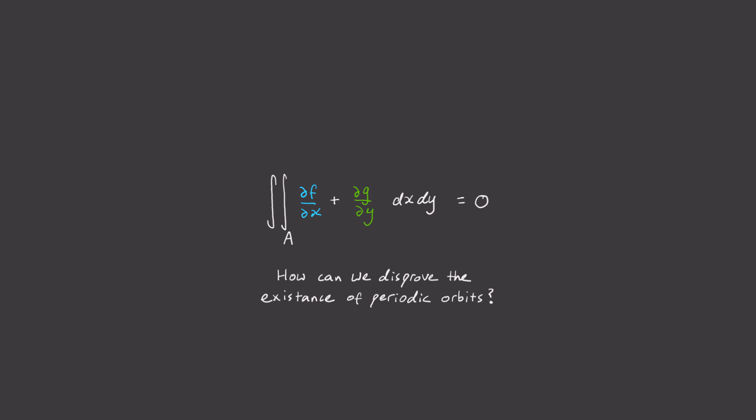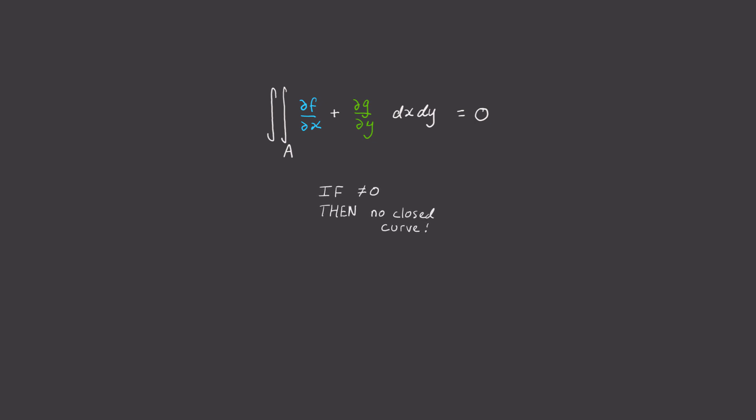How can we use this result to disprove the existence of periodic orbits? Well, just flip the thinking around. If it turns out after evaluating this integral that it's not 0, then we've shown that it can't be a closed curve. And when is this not going to return 0? Well, when the stuff inside the integral always has the same sign. In other words, if the partial of f with respect to x plus the partial of g with respect to y is always positive, then the integral will also end up being positive, and so not 0.